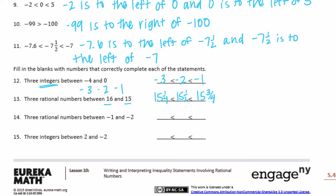Three rational numbers between negative one and negative two. Lots of choices here — I'll use decimals this time. Starting with the smallest: negative one and nine-tenths is less than negative one and five-tenths, which is less than negative one and two-tenths. There are lots of different choices, as long as they go from least to greatest.